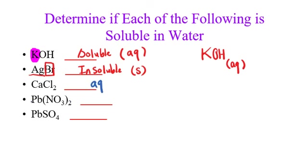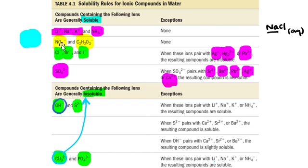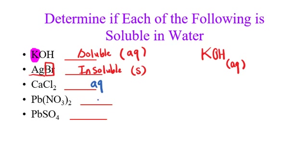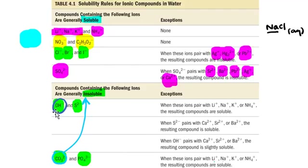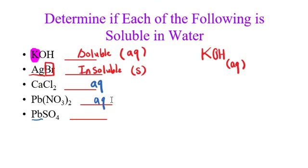Pb(NO3)2 — PB paired with nitrate. Rule: all nitrates are soluble, no exceptions. So we write (aq). How about PbSO4? We have Pb — double check. SO4 compounds are soluble except when paired with lead(II), Pb²⁺. We have lead(II) here, so the resulting compound is insoluble — we write solid, (s).